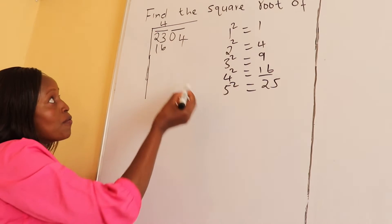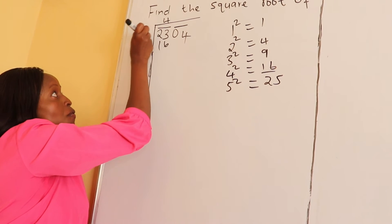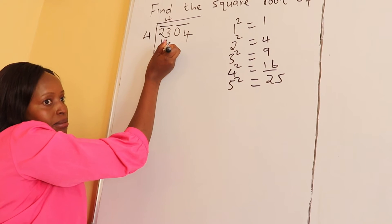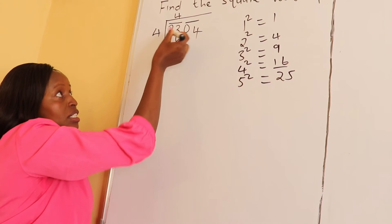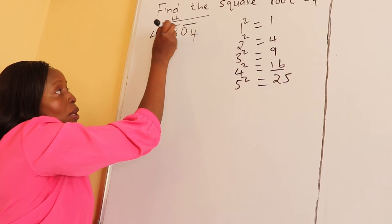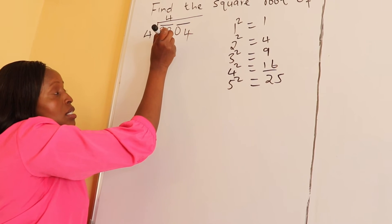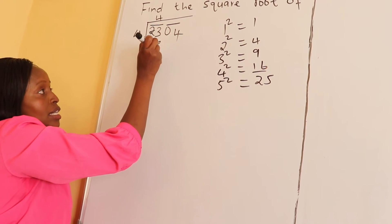Therefore, 4 times 4 gives us 16. The next step, we take away 23 take away 16. So we borrow one here, it becomes 13. 13 take away 6 is 7.